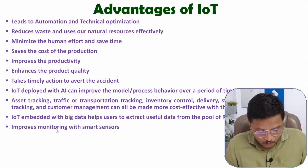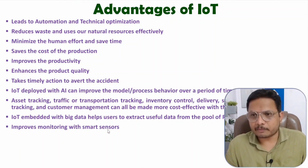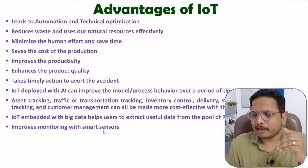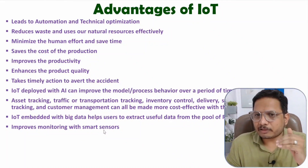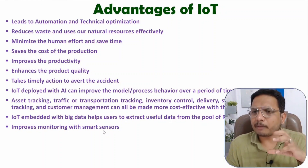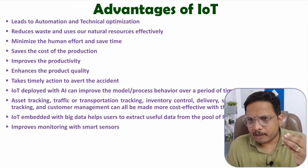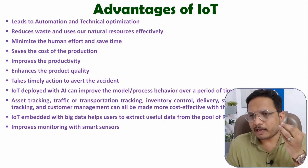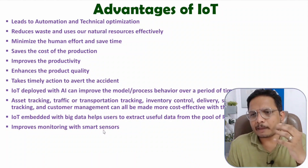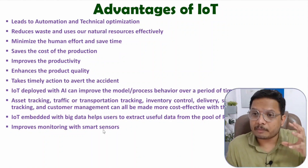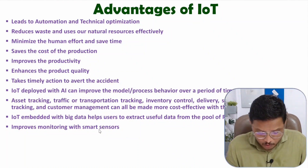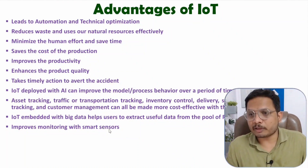IoT improves monitoring with smart sensors. Sensors are an important component of the Internet of Things. With smart sensors, you can make the monitoring of applications even better. You can monitor many things such as temperature, gas leakage, and weight — all possible parameters. By using the Internet of Things, all physical parameters can be monitored and optimized. For this, you need to integrate your sensors with your applications.